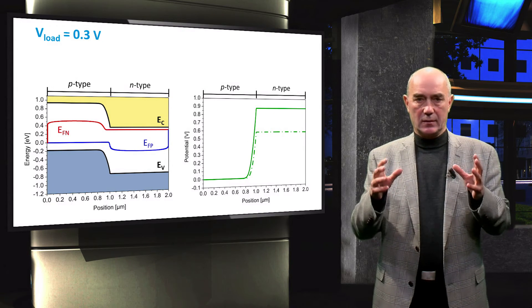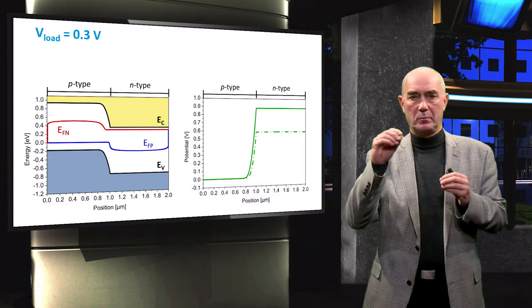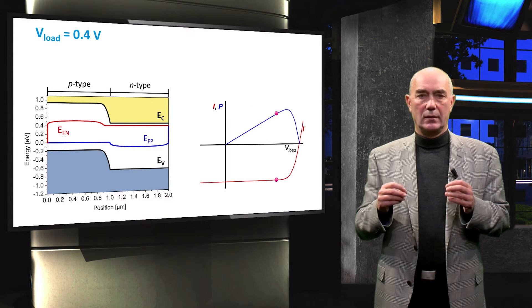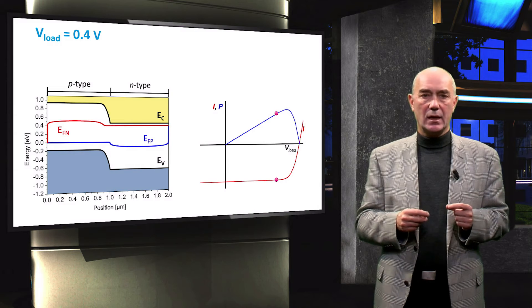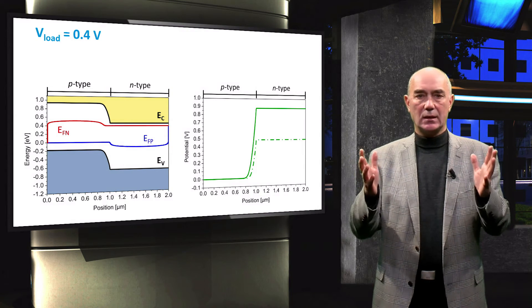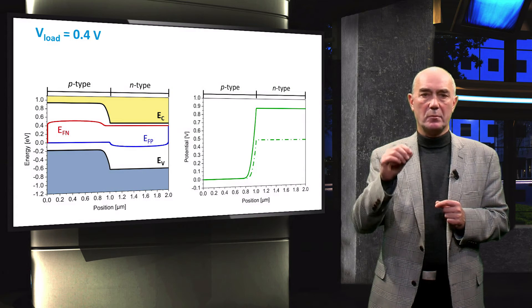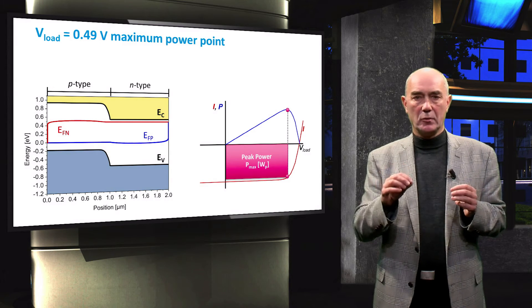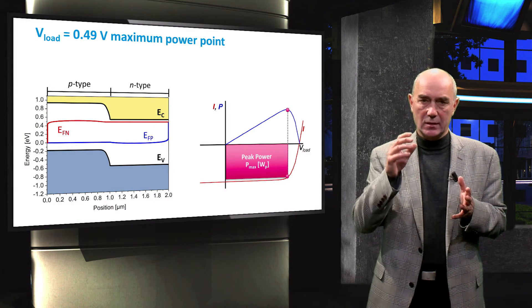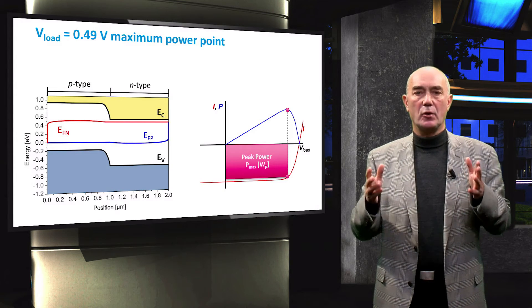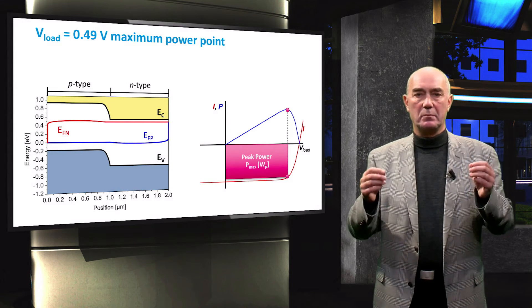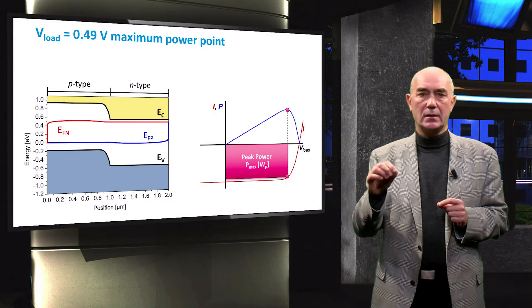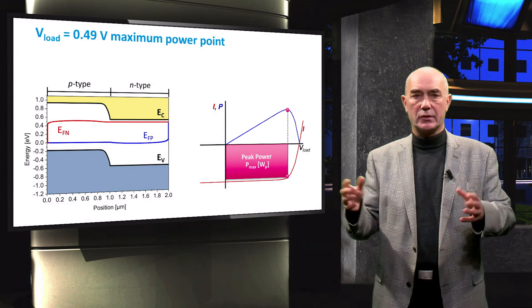The difference between the position of the quasi-Fermi levels in the P-type and N-type regions of the diode is decreasing. These are the plots of band diagram and electrostatic potential for the operating voltage of 0.4 V. When the voltage drop at the load happens to be the voltage at the maximum power point, the solar cell is operated at the maximum power point — this is the point at which a solar cell delivers the maximum useful power to the external circuit.